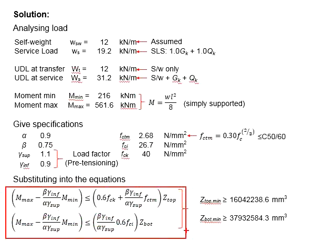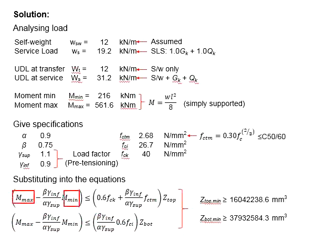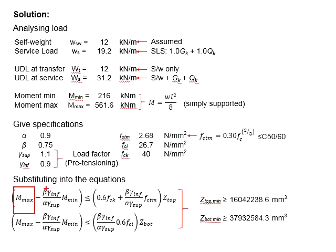Next, we need to acquire M_maximum and M_minimum. M_maximum is for the service state, while M_minimum is for the transfer stage. M_minimum is computed from the self-weight of the member, while M_maximum is the summation of self-weight, GK, and QK. We first need to consider the self-weight of the member; however, at this stage we do not know the member size, so we assume a self-weight of 12 kN/m, which will be checked later.